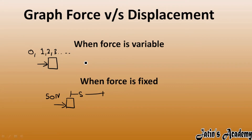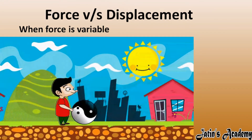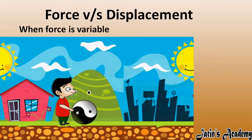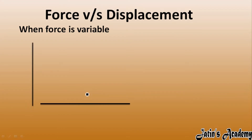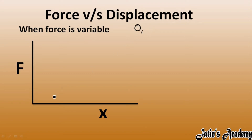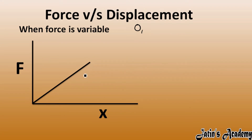Now let's see the example when force is variable — initially we are applying less force, then force keeps on increasing. On the graph, y-axis represents force and x-axis represents displacement. Force is variable, so initially force is zero, displacement is zero, then both keep on increasing. The area under this curve will give you the value of work done.